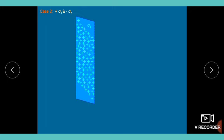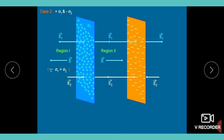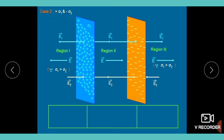For two parallel sheets with equal and opposite charge densities (+σ₁ and −σ₂), the situation modifies. For the negatively charged plate, field lines point toward it. In region 2 (between the plates), E₁ and E₂ are in the same direction. In region 1 (left of both plates), E₁ and E₂ are in opposite directions. In region 3 (right of both plates), E₁ and E₂ are again in opposite directions. The net fields in each region are calculated accordingly.